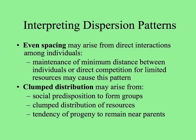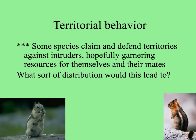What might cause these patterns? Hyper-dispersion or even spacing probably arises from interactions among individuals — it could be competition for resources or space, or even antagonistic interactions besides competition. A clumped distribution, on the other hand, could arise from social behavior, resources occurring in clumps in the habitat, or the phenomenon of progeny remaining near their parents. Think about a species like a chipmunk where males show territoriality toward other males and defend their territory because it's a place where they can get the most resources for themselves and their mates. What sort of dispersion pattern would you expect this to lead to?